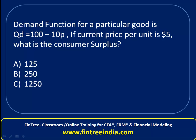What we have here is a demand function, and the demand function has been given to us as 100 minus 10P. We also have the current price, which has been given to us as $5, and we've been asked to calculate consumer surplus.